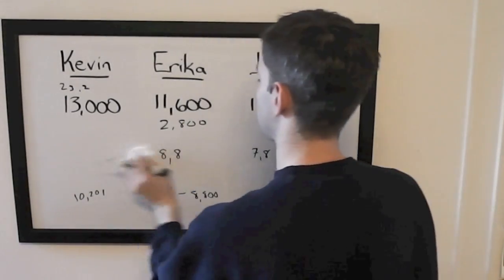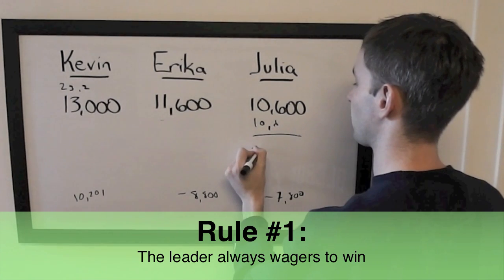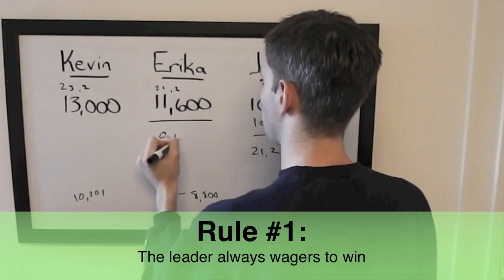Now between Erica and Julia, second and third, Julia doubles up. She's going to have $21,200. So to cover her, Erica will need to wager at least $9,601.